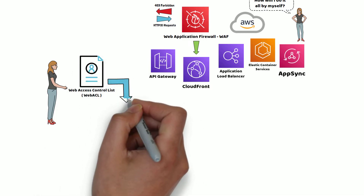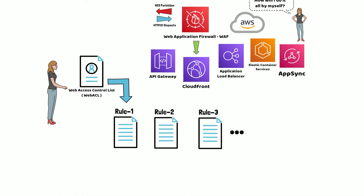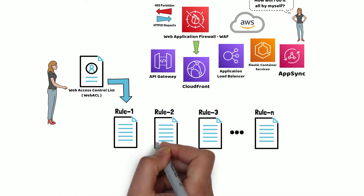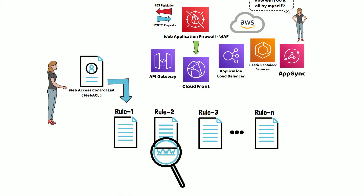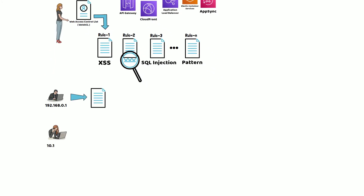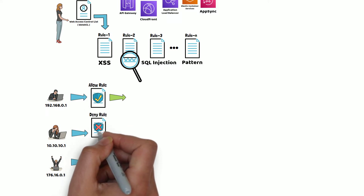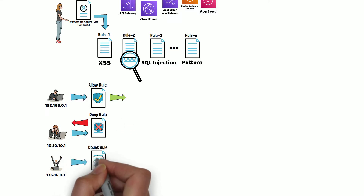Each WebACL can consist of one or more rules that analyze HTTP requests for a particular pattern. When the request matches the pattern, WAF can be configured to either allow the request, block the request, or simply count them. Counts are primarily used to test how often the request matches a particular rule.